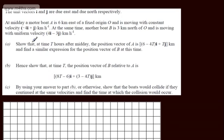In part A, we need to show that at time t hours after midday, the position vector of A is (6 minus 4t)i plus tj km, and find a similar expression for the position vector of B at this time.